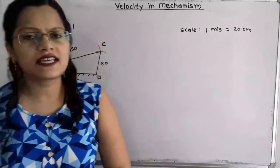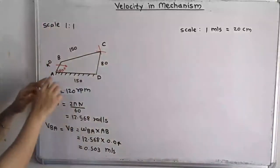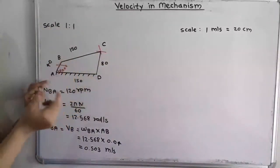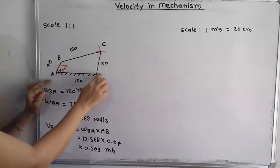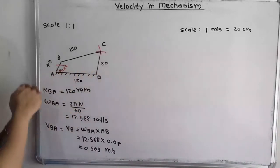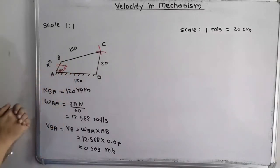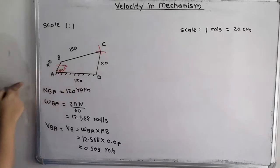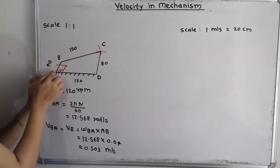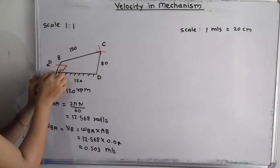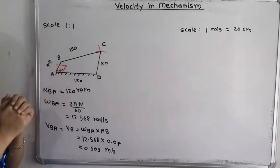So here we will take scale 1 is to 1. That means we are going to take AD as 150 mm, that is 15 cm. This is the fixed link. Here is bar AB, which is making a 60-degree angle and is rotating in the clockwise direction. So we have to take an angle of 60 degrees and draw bar AB, which is 4 cm long.